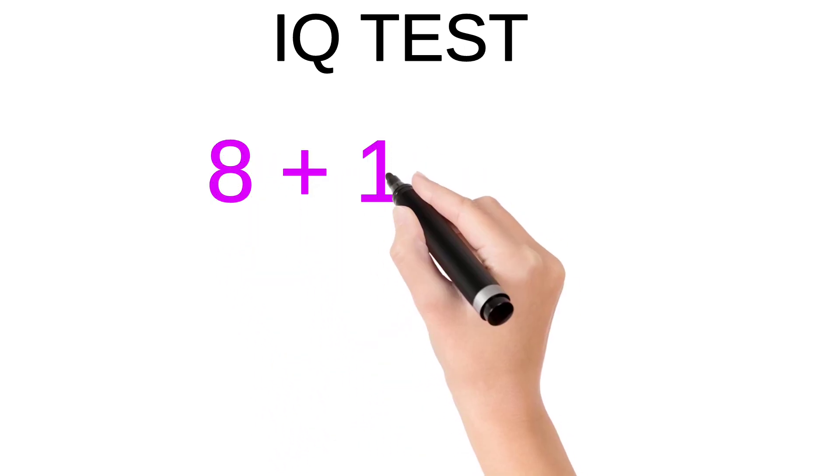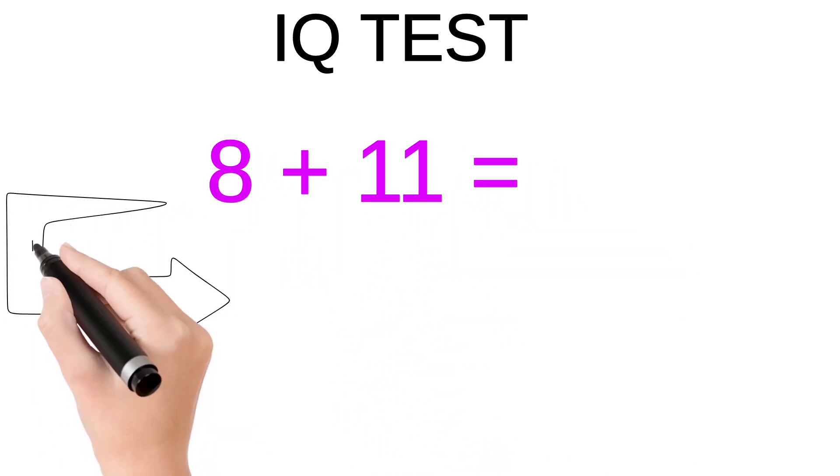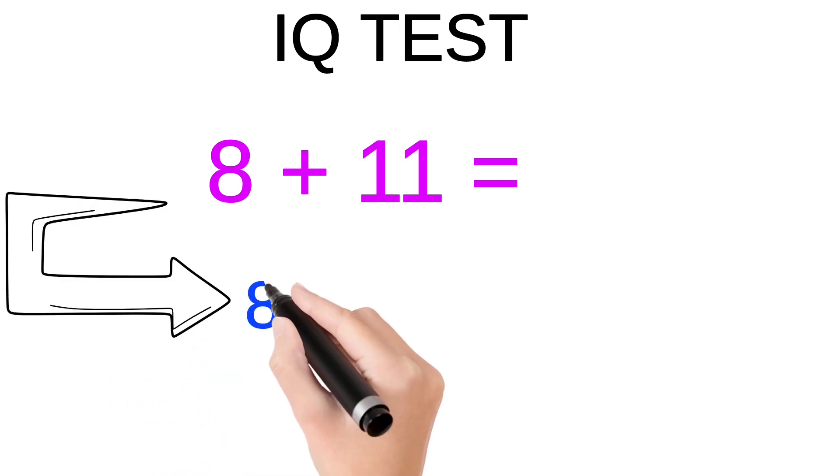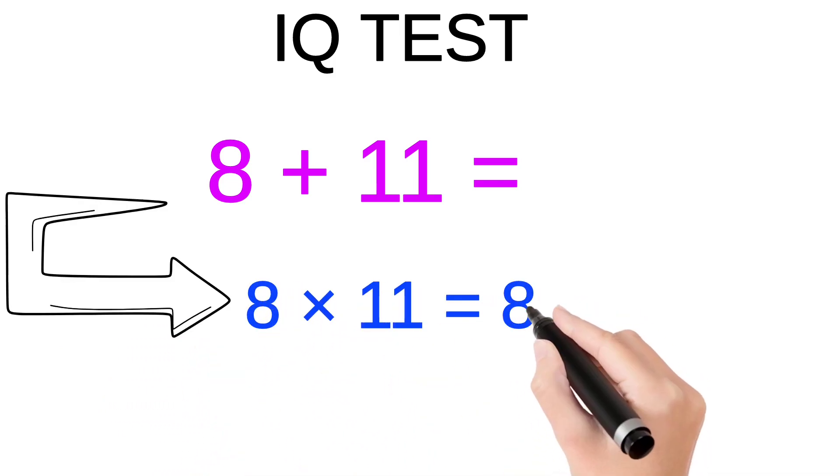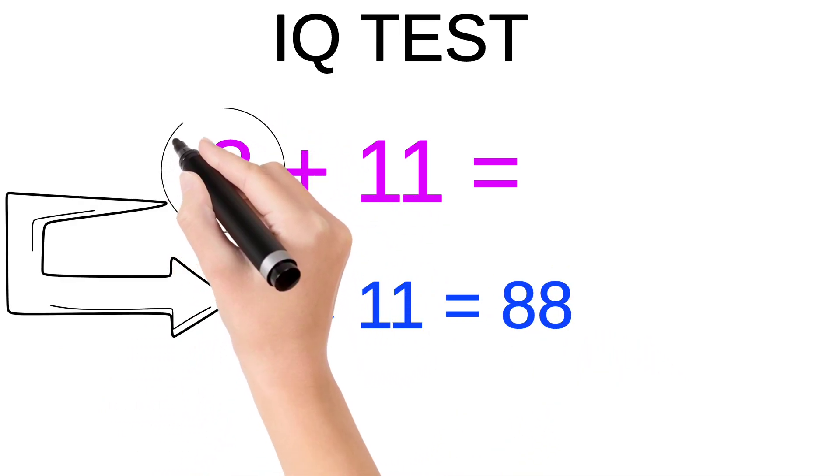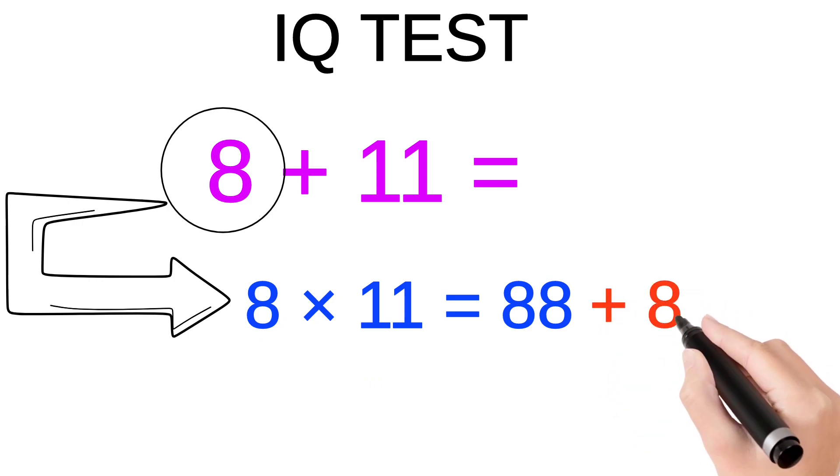Now we apply the same pattern to get the value of 8 + 11. Multiply both numbers: 8 × 11 = 88. Now add the first number, which is 8.